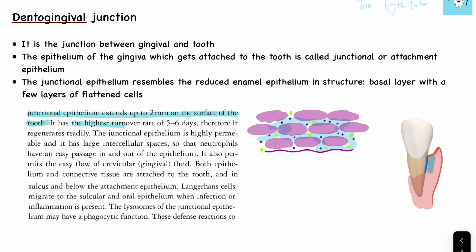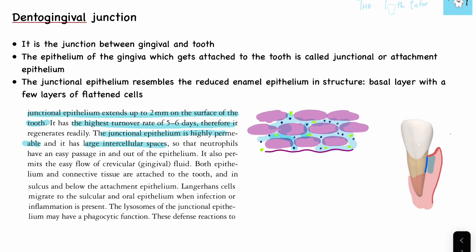The junctional epithelium has the highest turnover rate of 5 to 6 days, so it regenerates very readily. It is also highly permeable because it has large intercellular spaces between the cells. Because of these intercellular spaces, bacteria can get into this epithelium and cause various infections.